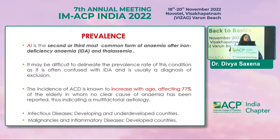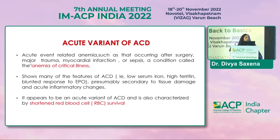Anemia in infectious disease is common in developing and underdeveloping countries. There is also an acute variant of anemia of chronic diseases occurring after surgery, after major trauma, after myocardial infarction or sepsis — this is known as anemia of critical illness. It has similar features to anemia of chronic diseases: low serum iron, high ferritin, blunted response to erythropoietin, and it is most probably due to extensive tissue damage and acute inflammatory changes. It is considered a variant of anemia of chronic diseases characterized by shortened red blood cell survival.